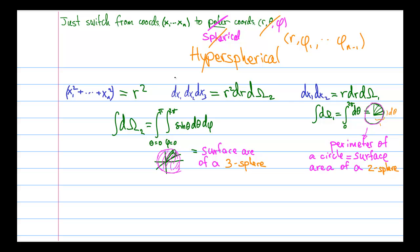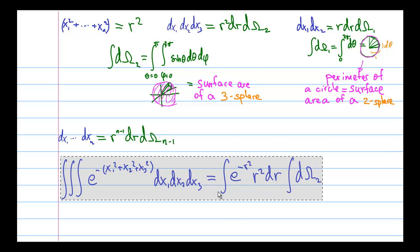So now we're ready to tackle the n-dimensional case. What we do in n-dimensions is we separate the radial part from the angular part, and the angular part we will call d omega n-1, because there are n-1 angular variables and one radial variable.